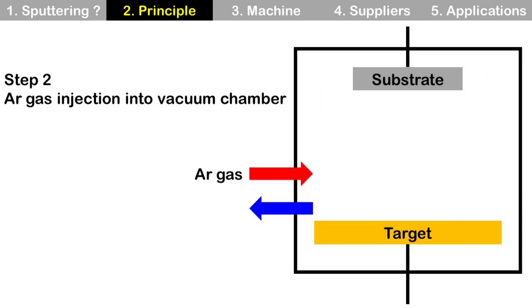Step 2: Argon gas injection into vacuum chamber. Put argon gas into the vacuum chamber. This argon gas is used to generate plasma. Then this plasma is used for sputtering target material. During the sputtering process, a specific volume of argon gas is provided into the vacuum chamber continuously.